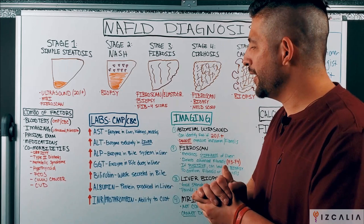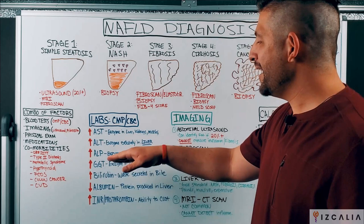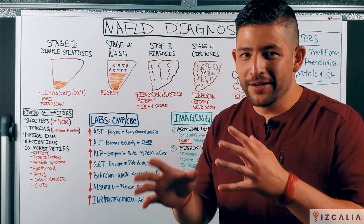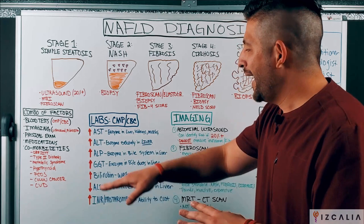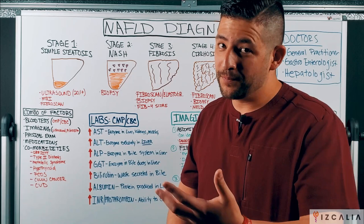ALT is a little more specific when it comes to the diagnosis and evaluation of NAFLD because it is primarily found in the liver. The next enzyme is ALP, which is found within the bile system of your liver, specifically in what's called the canaliculi — the tunnels and highways through which bile travels within your liver. If you get elevated amounts of ALP in your bloodstream, that means they're leaking out from that tunnel system, which points to some kind of damage occurring there.